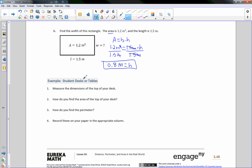All right, now it says examples, student desks or tables. Measure the dimensions of the top of your desk. How do you find the area of the top of your desk? How do you find the perimeter? Record these on your paper in the appropriate column. So I will measure a desk, and I'll let you know what our desk's measurements are in one moment. Okay, so I just measured our desks, and let me get my magic pen, and I will draw a desk. Okay, there's my desk. And I measured this to be 24 inches, and this is 18 inches. So it's two feet by one and a half feet. So there is the dimensions of the desk in my classroom. So once I measured the dimensions, there it is. Measure the dimensions of the top of your desk. There's number one.